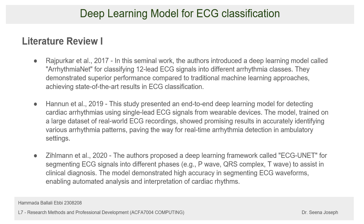Then ZINAMM in 2020 presented a framework called ECGNET for segmenting ECG signals into different phases: the P wave, the QRS complex, and the T wave. These are the segments that compose the ECG. Once these values could be segmented, it was easier for clinical staff to make diagnoses in a better way.